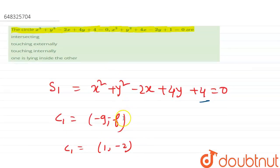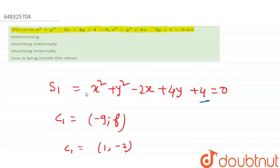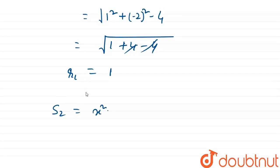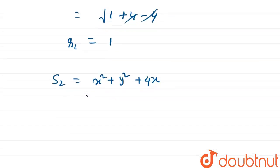Then equation 2, s2 equals to x square plus y square plus 4x minus 2y plus 1 equals to 0. Then c2, center of the circle c2 is minus g comma minus f, then minus of 2 is minus 2, and minus of minus 1 is 1. So c2 is (-2, 1).